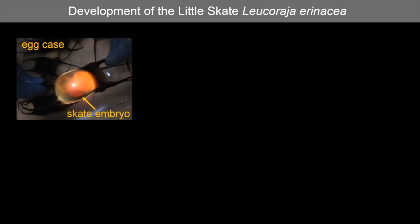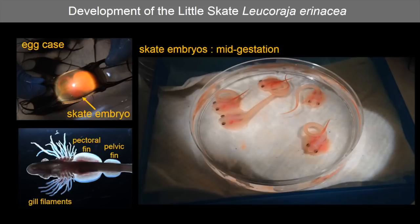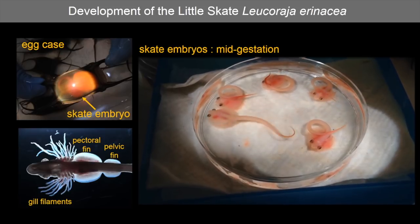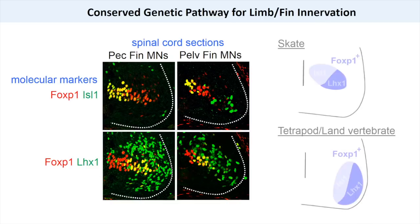In order to examine motor neuron specification in skates, we have to look at their early development. Skates develop inside an egg case, which makes it easy to access embryos to study their early development. As embryos, the most prominent locomotive output is from the tail, which eventually regresses after the animal hatches. By looking at sections of embryonic skate spinal cord and analyzing specific molecular markers, we were able to show that skates express many of the same transcription factors and other molecules present in the motor neurons of land vertebrates.